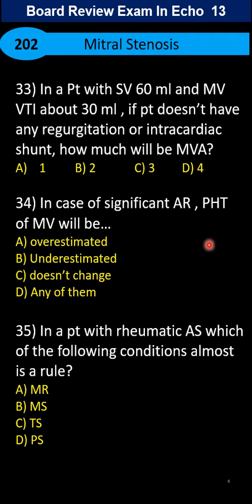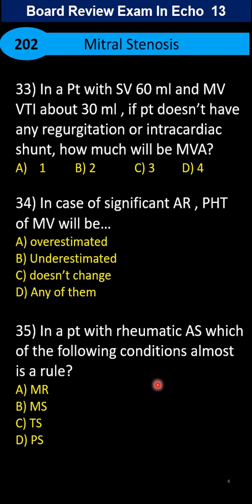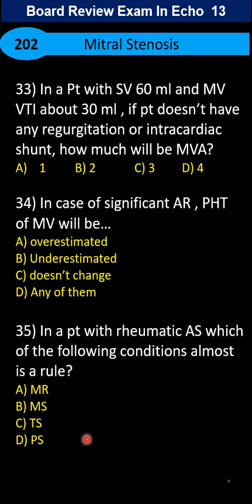In the case of significant aortic regurgitation, what happens to the pressure half-time of the mitral valve in the setting of mitral stenosis and AR? And in a patient with rheumatic aortic stenosis, which of the following conditions is almost always a rule: mitral stenosis, tricuspid stenosis, or pulmonary stenosis?